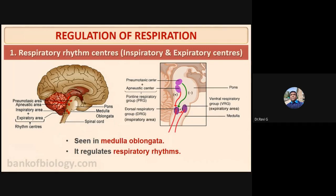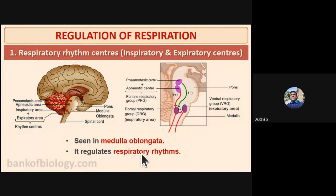The respiratory rhythm center is located in the medulla oblongata. It contains an inspiratory area and an expiratory area that regulate the rhythm of respiration — the inspiratory area regulates inspiratory rhythm and the expiratory area regulates expiratory rhythm.